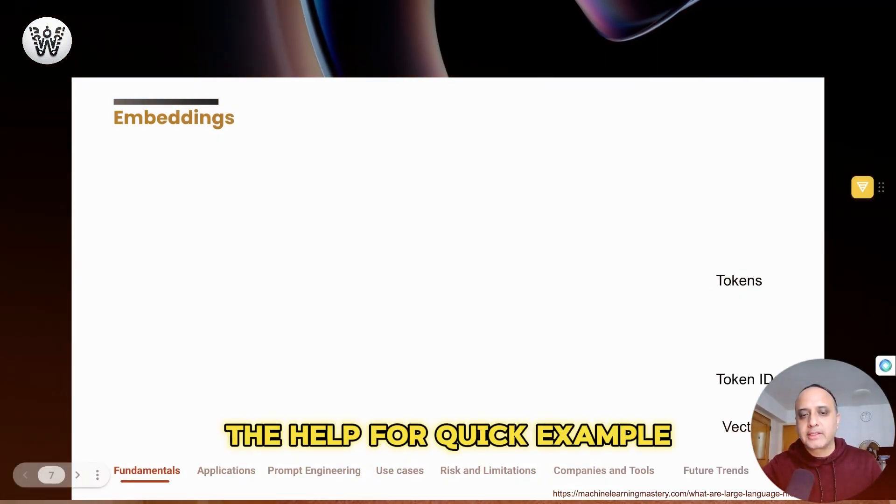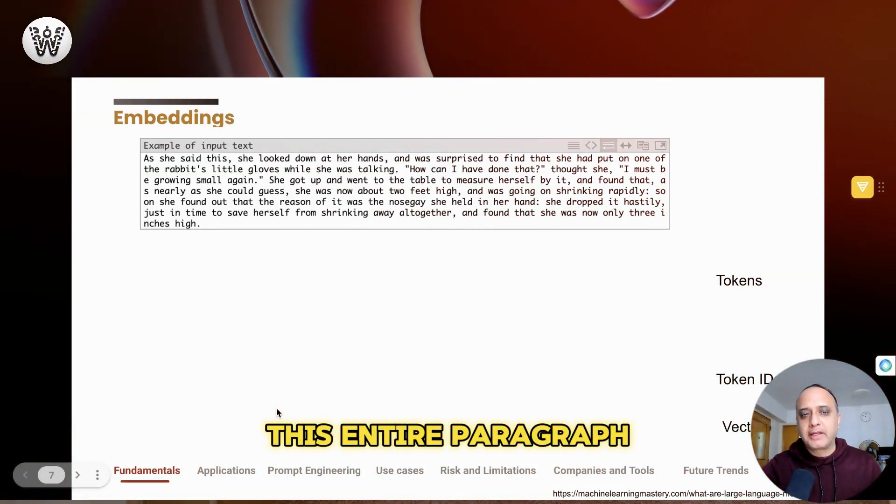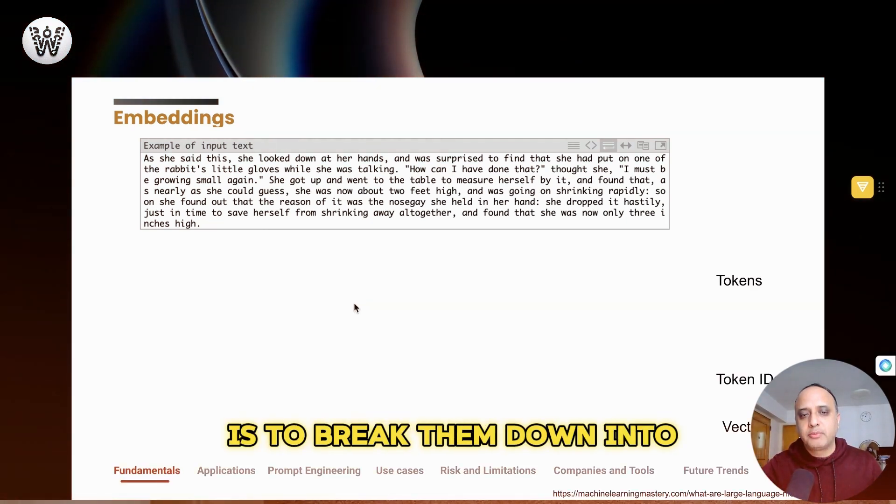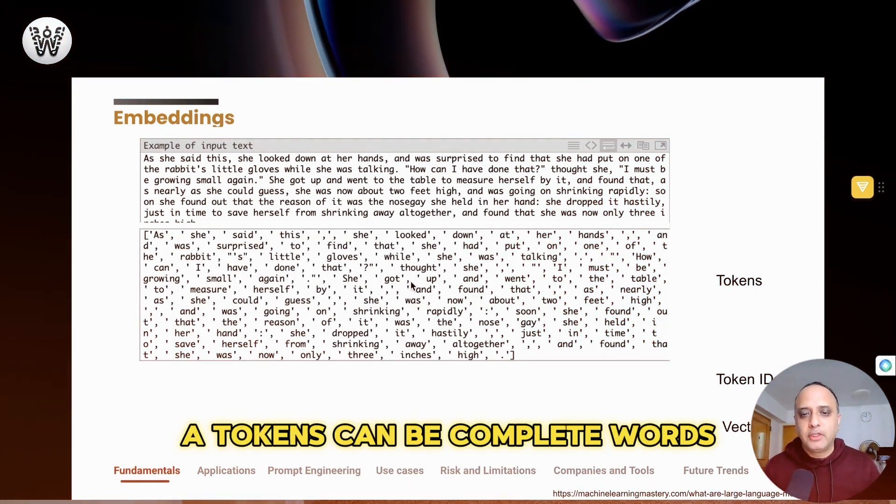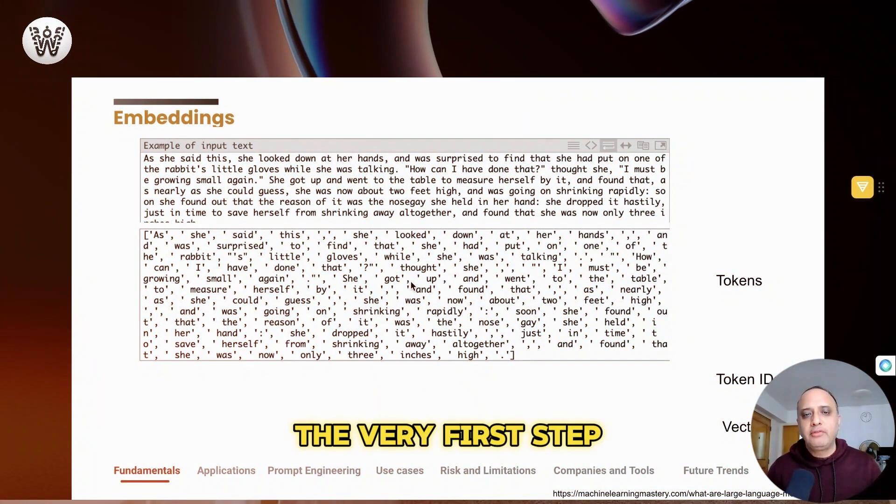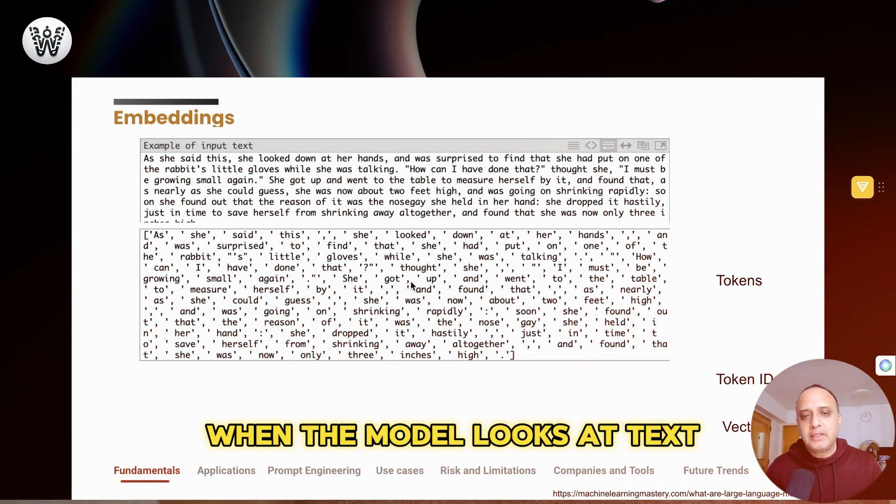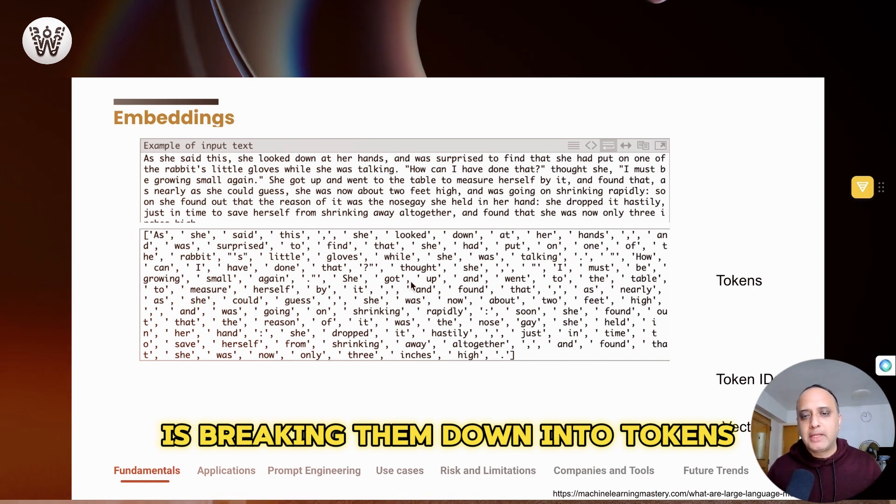Let's see this with the help of a quick example. If, for example, you have this entire paragraph, the first thing to do is to break them down into what is called tokens. The tokens can be complete words, they can be subwords, they can be punctuation marks. The very first step which happens when the model looks at text is breaking them down into tokens.